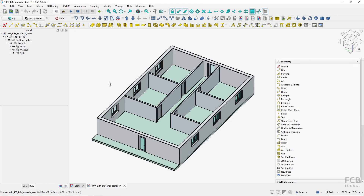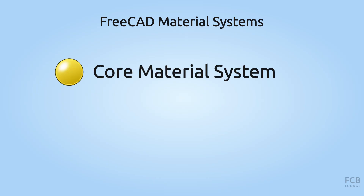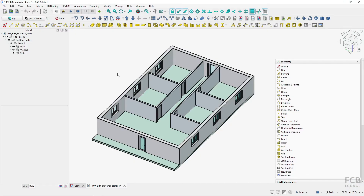Hi, I'm Tom with the FCB Lounge channel and in this tutorial I will show you how to create and work with BIM materials. I'm using FreeCAD 1.1. First, it's important to understand that there are two independent material systems in FreeCAD: the core material system and the BIM material system. You can mix these two but it's not recommended. If you work in the BIM workbench it's recommended to use the BIM material system. I recorded a separate tutorial about the core material system, so if you're interested you can watch it — it's linked in the description box below.